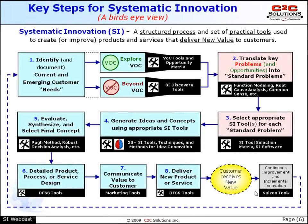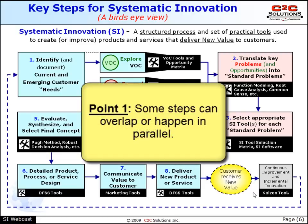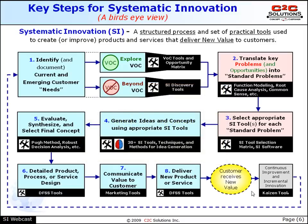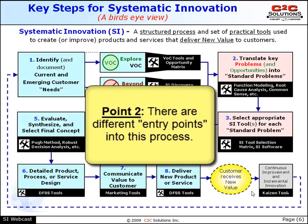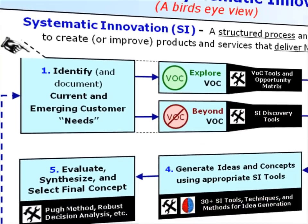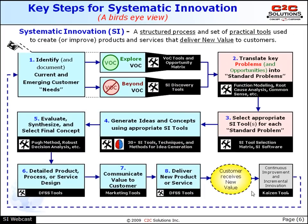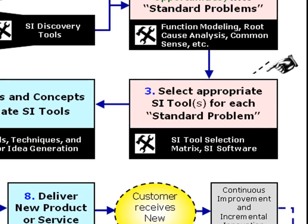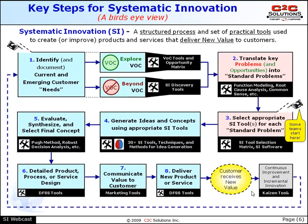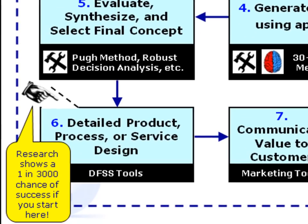Now before we finish this webcast, I have four quick points about this eight-step systematic innovation process worth noting. First, this flowchart looks very serial or sequential, but a few of these steps can overlap or even happen in parallel. Second, although the best place to start this process is certainly in Step 1, you can start at different locations. For example, many teams start in Step 3 with a particular tough problem they're having. On the other hand, it's been shown that you have a very slim chance of success if you skip or rush through the first five steps and start in Step 6.